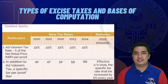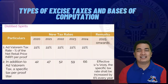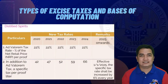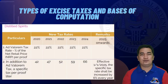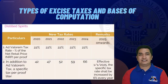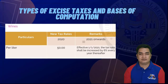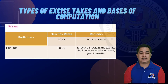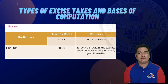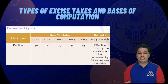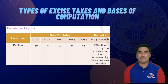Let's start with the distilled spirits. The ad valorem rate has a constant rate of 22%. In addition to the ad valorem rate, there is a specific tax rate per proof liter. For wines, there is a 50 pesos per liter excise tax, and effective January 1, 2021, there is an increase of 6% every year thereafter.